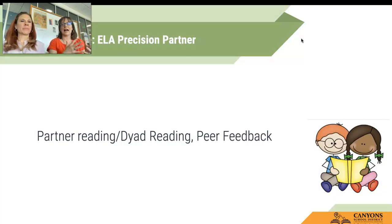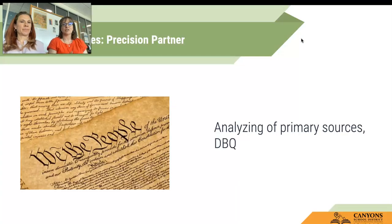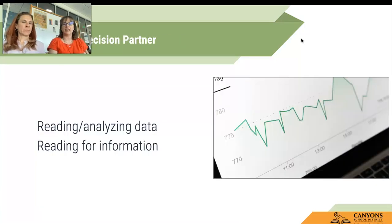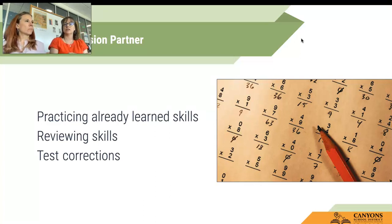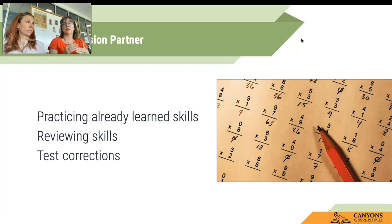When is precision partnering appropriate in specific content areas? In ELA: partner reading or dyad reading, using it for peer feedback. In social studies: analyzing primary sources, using and answering document-based questions. In science: reading and analyzing data or reading for information. In math: practicing already learned skills, reviewing skills, using test corrections. The commonality across all four is that precision partnering is specific to skills students need in order to be successful in the task. If it's something that they need to skill up on, that's where precision partnering would be the best option.